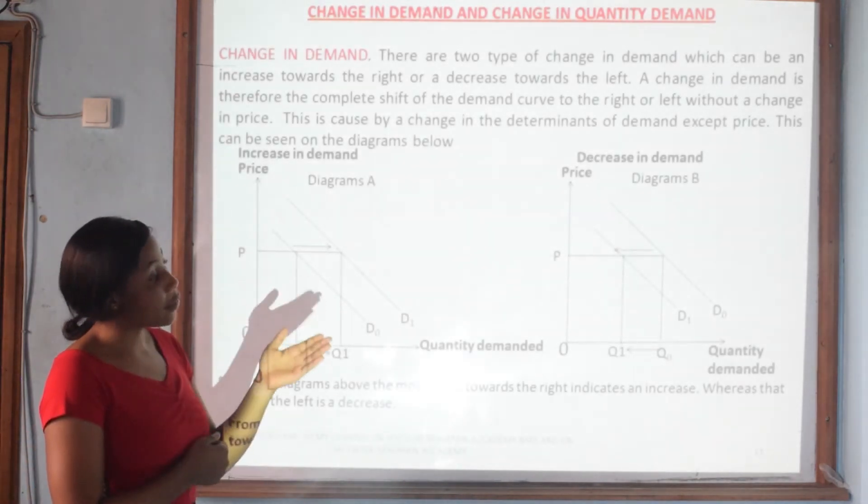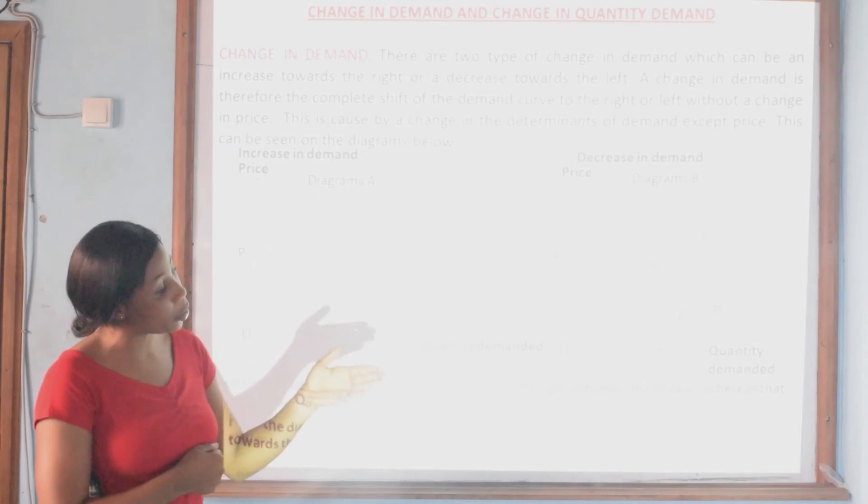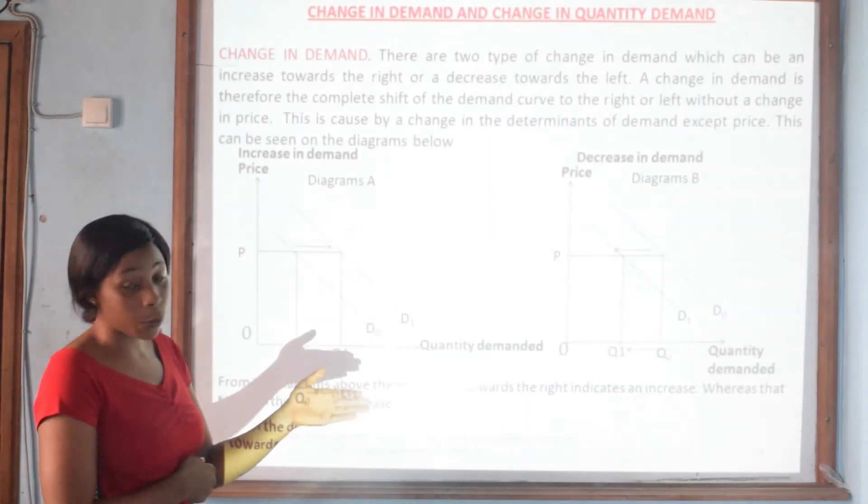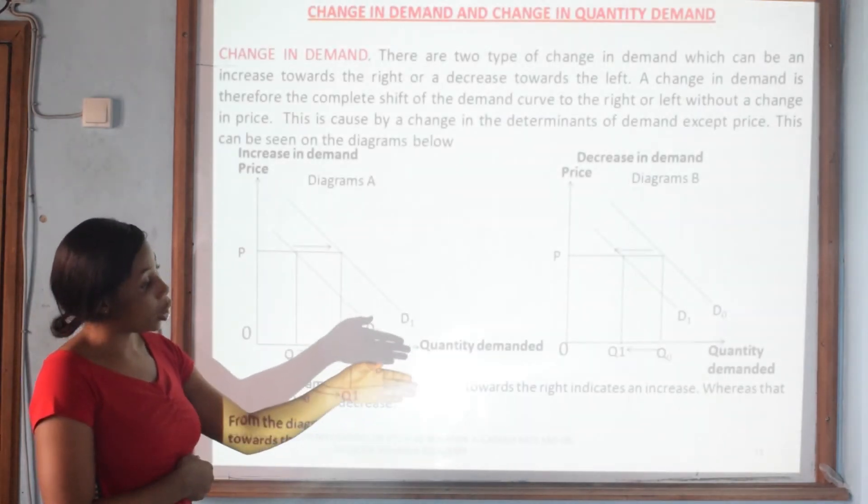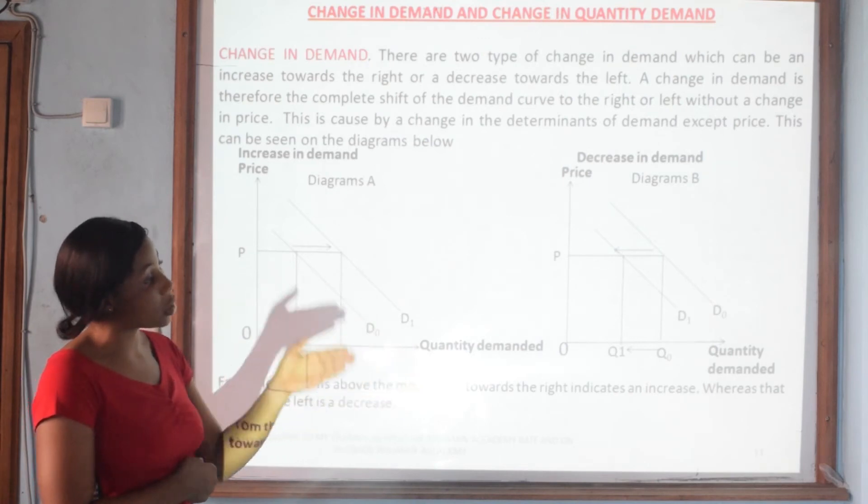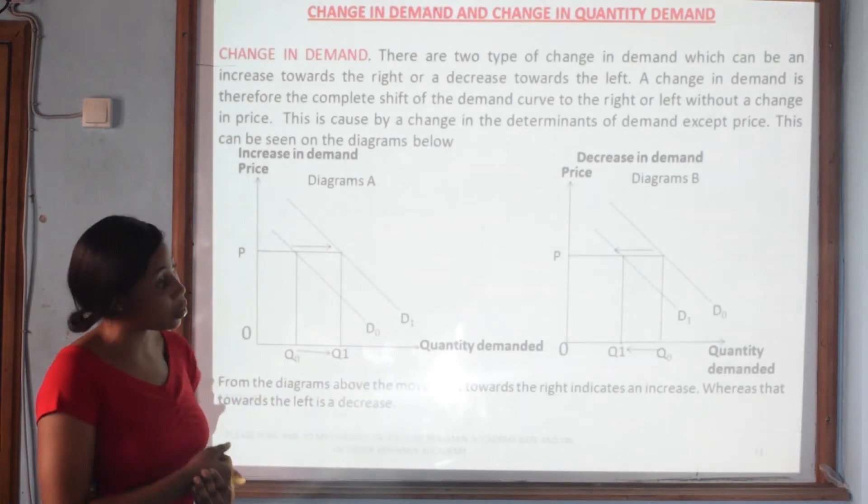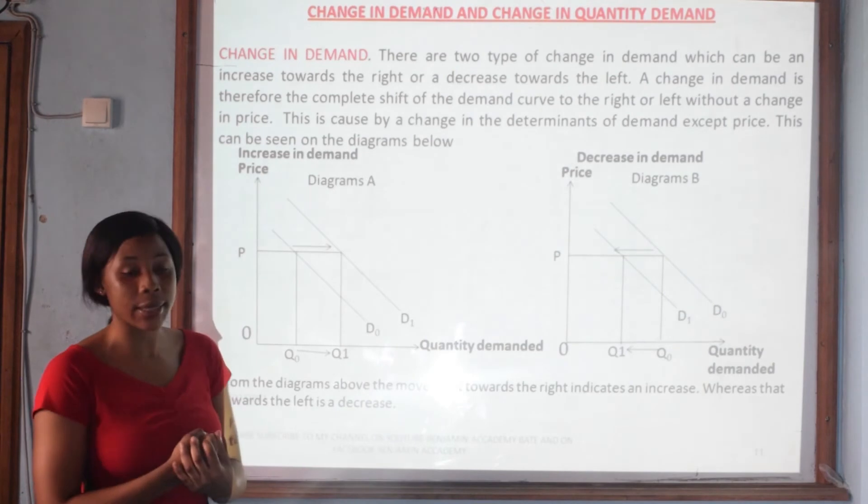And in our other diagram, if the effect of the campaign, if plans are not being successful, demand is going to fall. That is indicating from Q0 to Q1, and this will cause the demand curve to shift to the left, causing a decrease in demand.